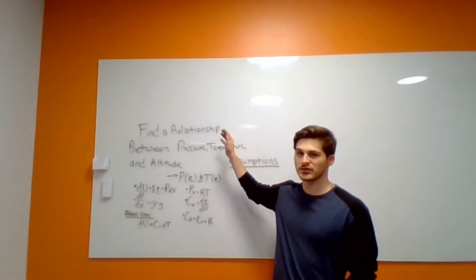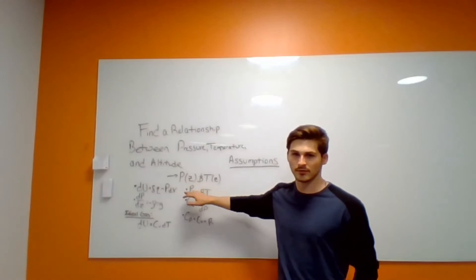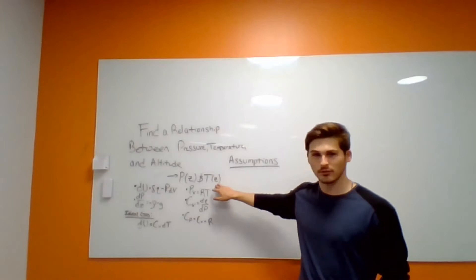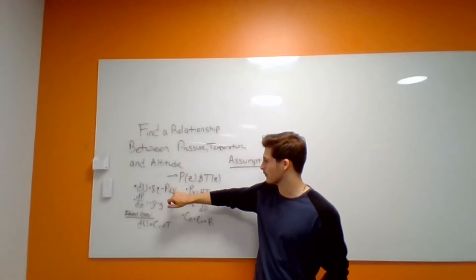Hey everyone, my name is Matthew and today we're going to be going over how to find a relationship between pressure, temperature, and altitude. Essentially what we're doing is finding a function for pressure in terms of z, which is going to be our altitude component, and a function for temperature as well in terms of z. We're going to use six very important equations and make a couple of assumptions.